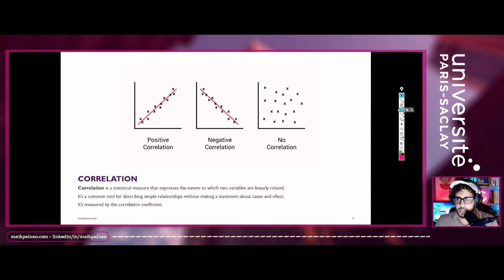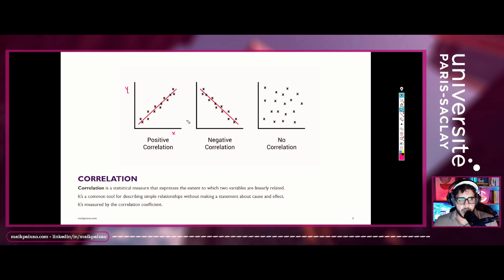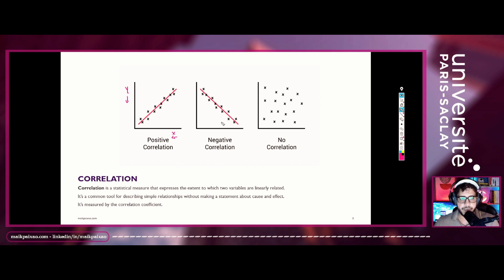We have basically three types of correlation, as you can see in the image. We have positive correlation — that is when we have two variables, let's suppose x and y, and when x goes up, y goes up, and when x goes down, y also goes down. When that happens, we have a sign of positive correlation.